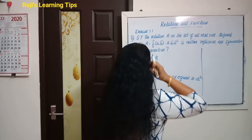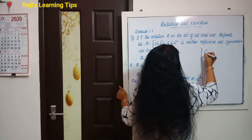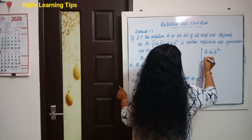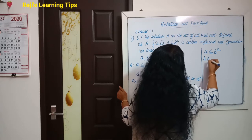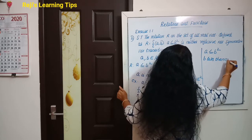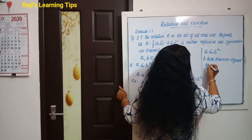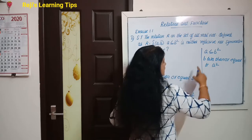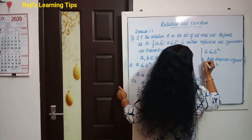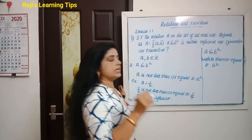Now check symmetry. If a ≤ b², we need to check whether b ≤ a² also holds. We will check that b is not necessarily less than or equal to a².